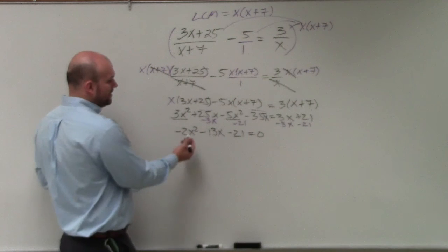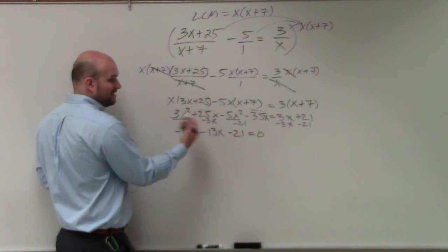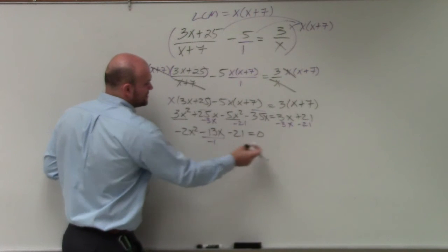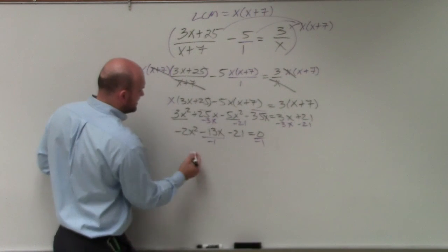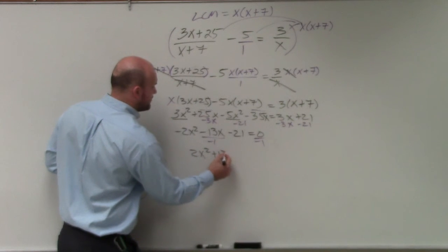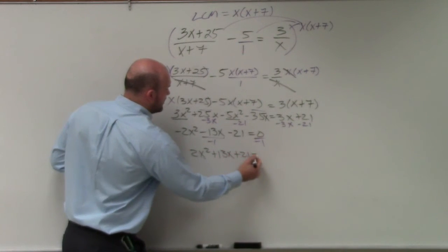Remember when factoring, ladies and gentlemen, I always like, we can always, I don't like my first term to be negative. So I'm just going to divide both terms by negative 1 to eliminate that negative in front. So I have 2x squared plus 13x plus 21 equals 0.